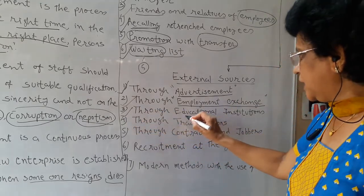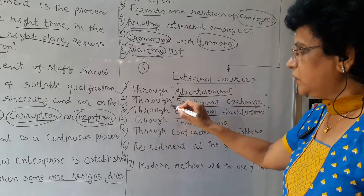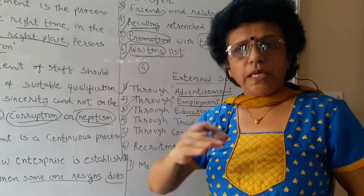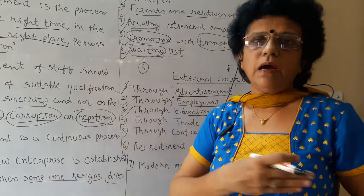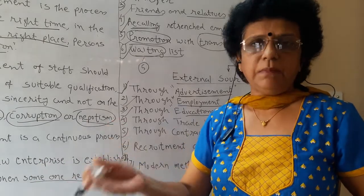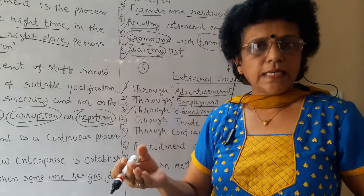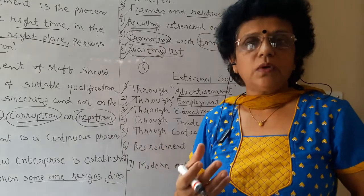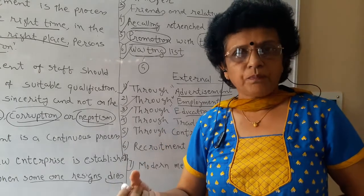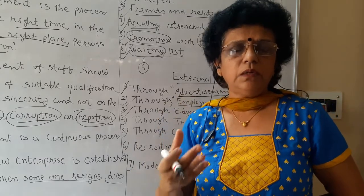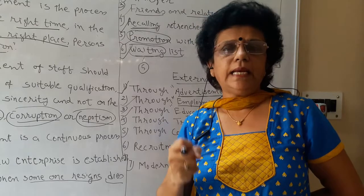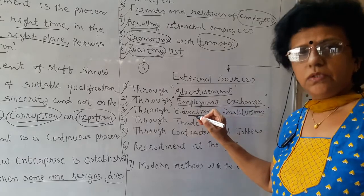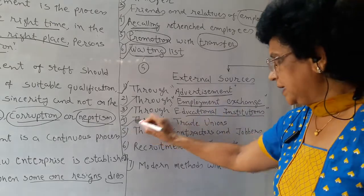The next external source is through educational institutions — going directly to the source. When you go for a campus interview and enter the campus, there is an ample number of probable employees available: enthusiastic, knowledgeable, and capable of doing something new. When you are looking for youth with potential and capability, the educational institution is a very good source of recruitment.